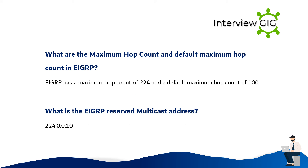What are the maximum hop count and default maximum hop count in EIGRP? EIGRP has a maximum hop count of 224 and a default maximum hop count of 100.